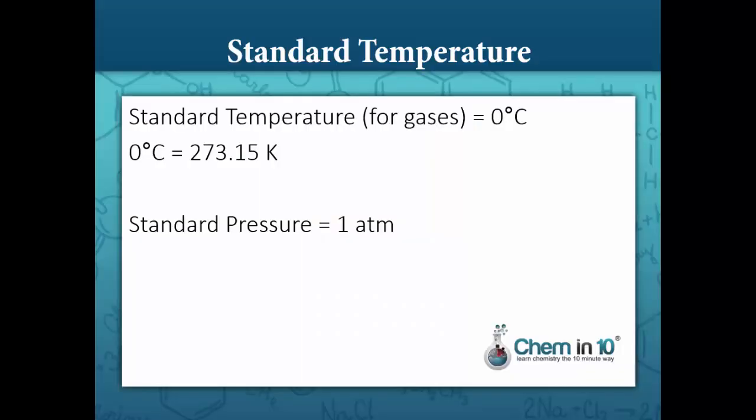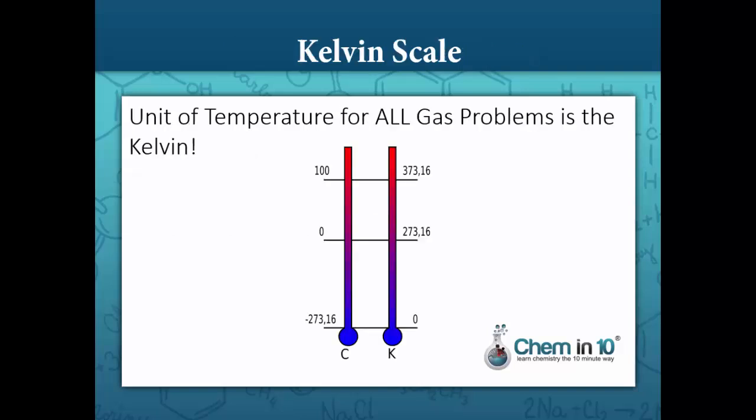Standard temperature for gases is zero degrees Celsius, which is equivalent to 273.15 Kelvin, and standard pressure is one atmosphere. The unit of temperature for all gas problems is the Kelvin.